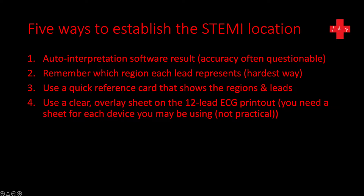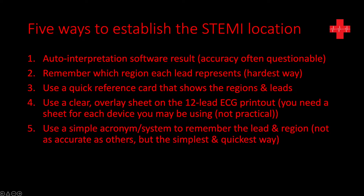There are also clear overlay sheets — essentially the size of a 12-lead ECG printout, a see-through piece of plastic printed with the areas of the heart. If you have a LifePak 15 or Zoll X Series, you buy a plastic sheet printed for that monitor's layout, stick it over the ECG printout, and it tells you the region. However, if you're using different monitors or don't have it with you, that may be impractical. Or you could use a very simple acronym or system to remember the lead-to-region association — the quick and dirty way — known as the SALI acronym: S, A, L, and I.